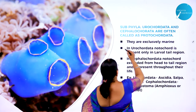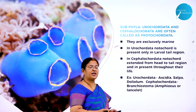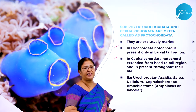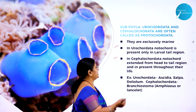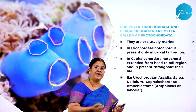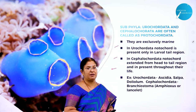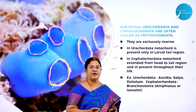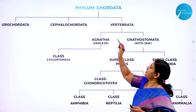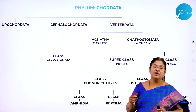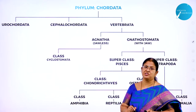Urochordata and cephalochordata together are called protochordates. They are exclusively marine. In urochordata, notochord is present only in the larval tail region; in cephalochordata, notochord extends from head to tail and is present throughout life. Salpa is a classical example for urochordata and Amphioxus for cephalochordata. Moving on to the general classification of phylum chordata.